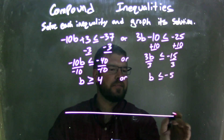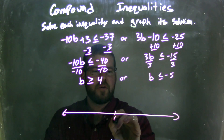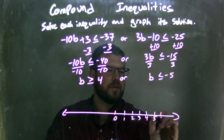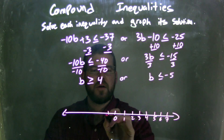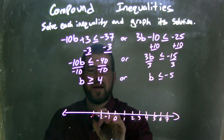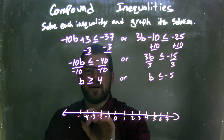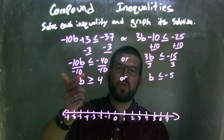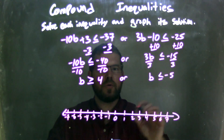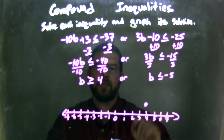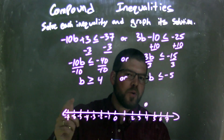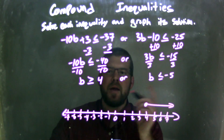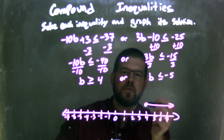Now let's graph it. I'll put 0 in the middle and mark off values from negative 7 to positive 7. Since b is greater than or equal to 4, I have a closed circle at 4. And since b can also be greater than 4, I'm going to put my arrow to the right. There we have our graph representing b is greater than or equal to 4.